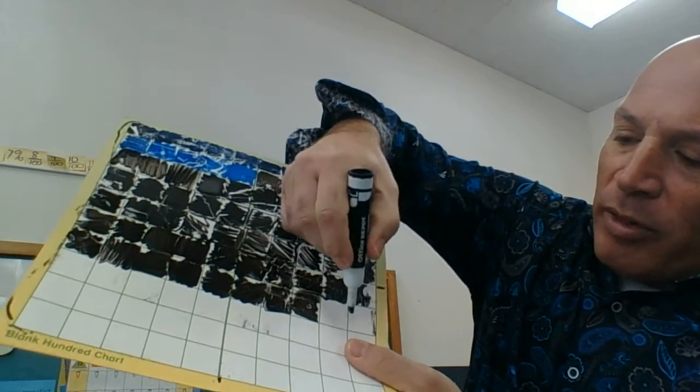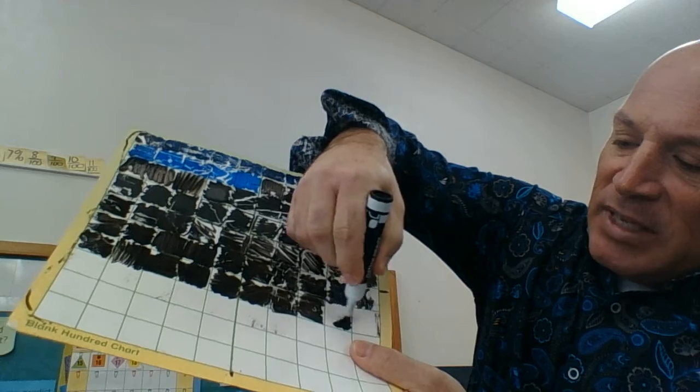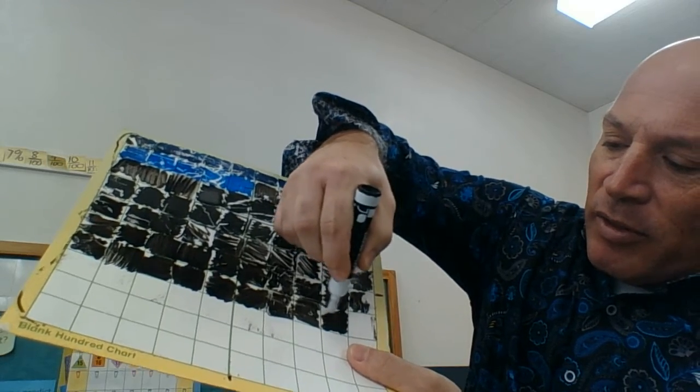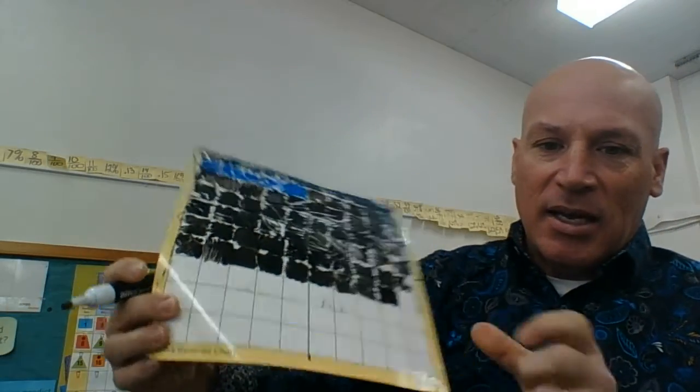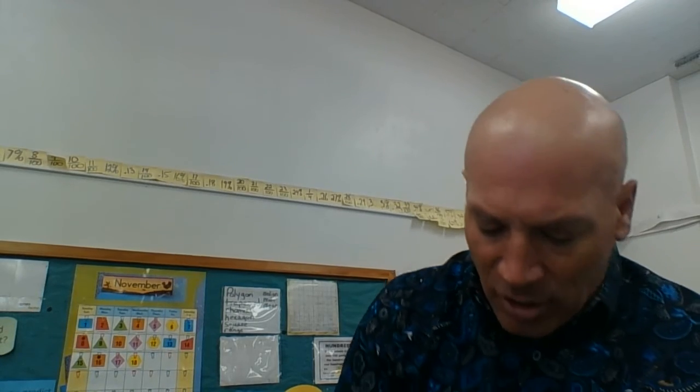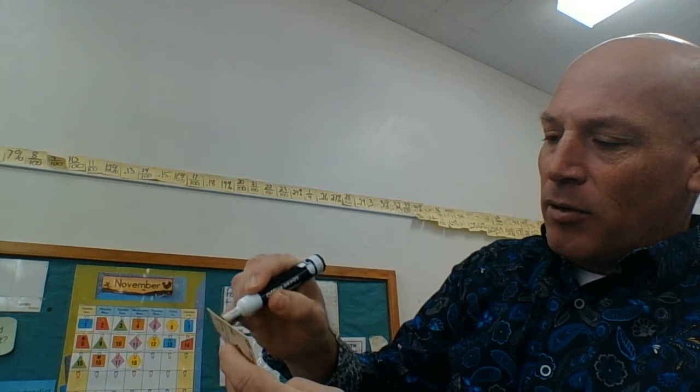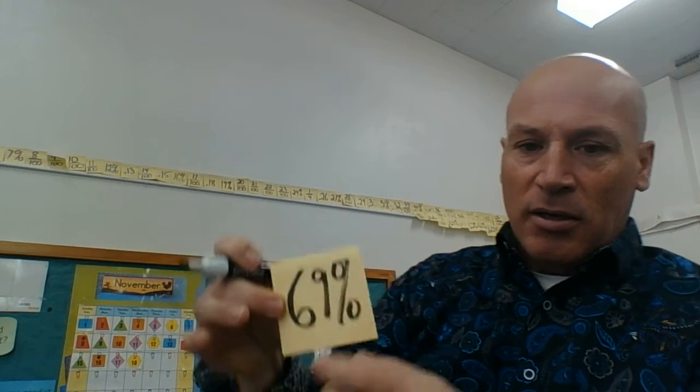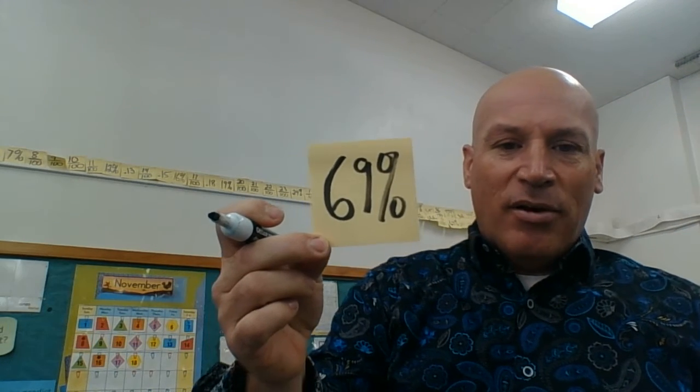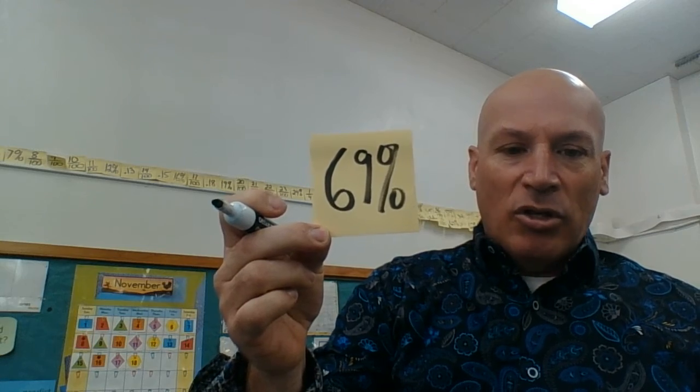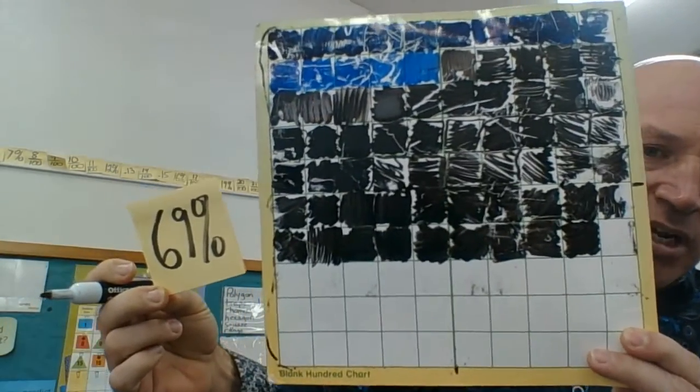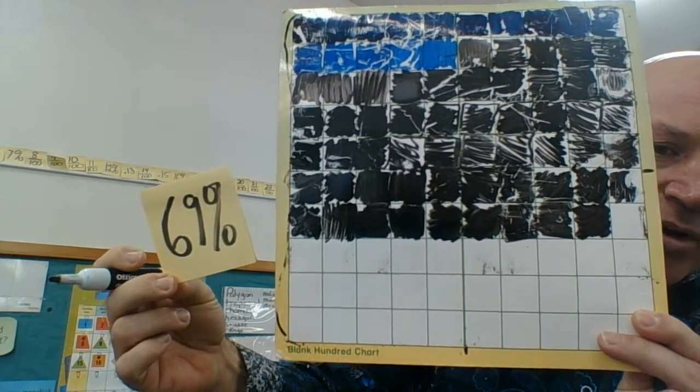And the way I'm going to write that on our daily ticker is I'm going to write 69 percent, because 'per' means out of and 'cent' means 100. So 69 percent is the same thing as represented here, 69 out of 100.